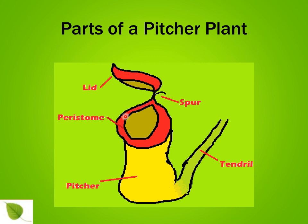This opening to the pitcher plant is called the peristome. This is the main pitcher, and this tendril attaches the pitcher plant to the rest of the tree. Did you know that pitcher plants are actually leaves?